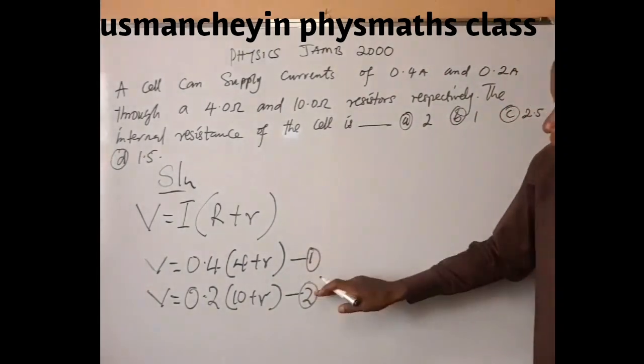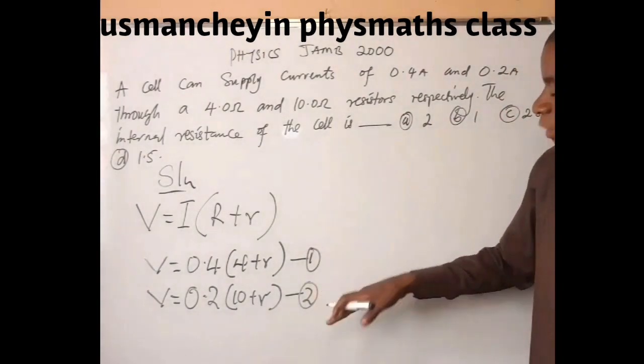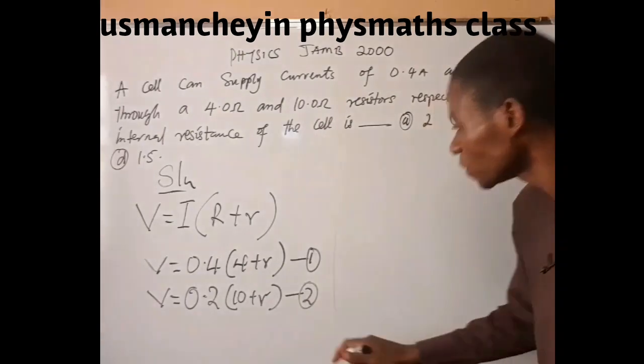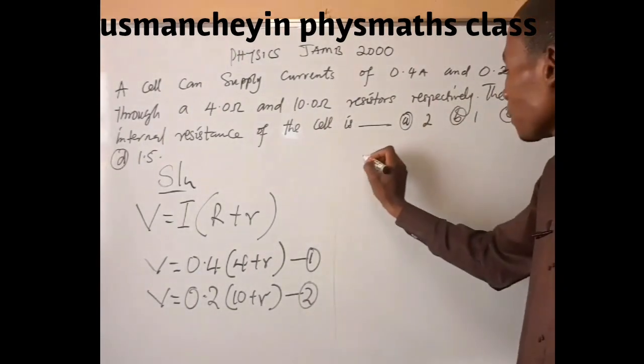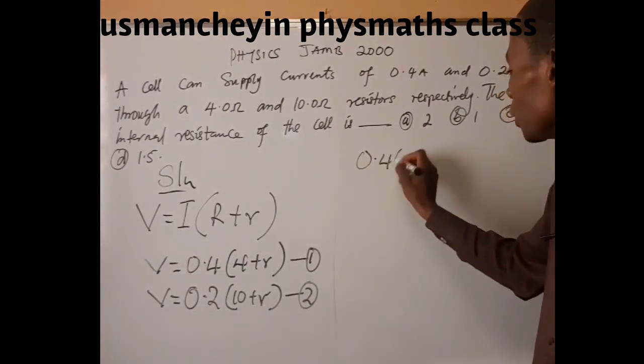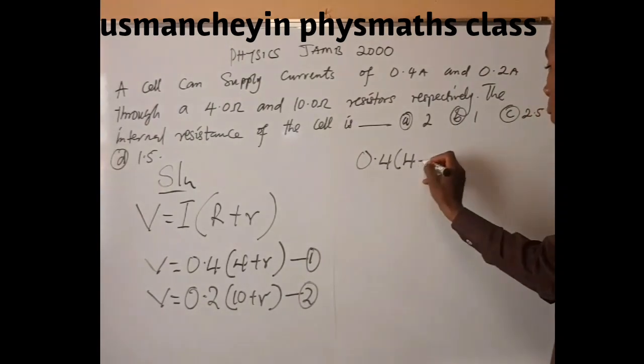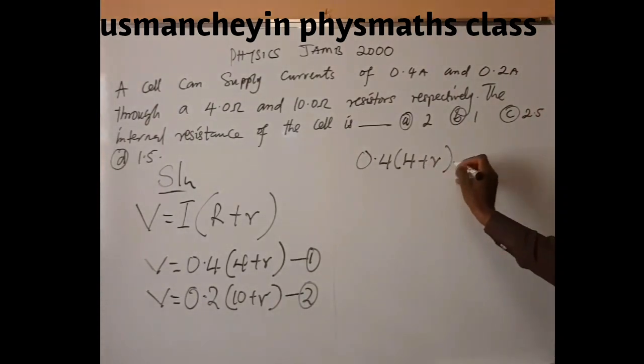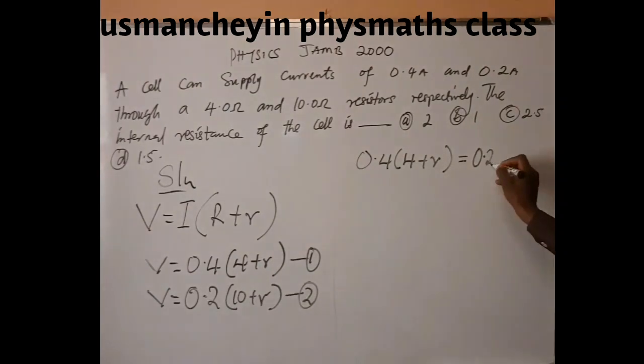When we obtain equation 1 and equation 2, we can equate the equations so that we have 0.4 into (4 plus R) equals 0.2 into (10 plus R).